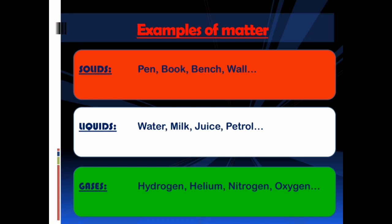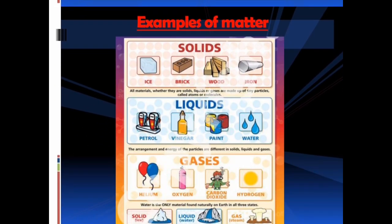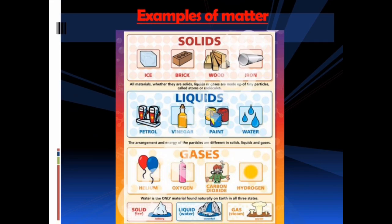Examples of matter — solids: pen, book, bench, wall; liquids: water, milk, juice, petrol; gases: hydrogen, helium, nitrogen, oxygen. Here you can see some more examples of matter of different states.